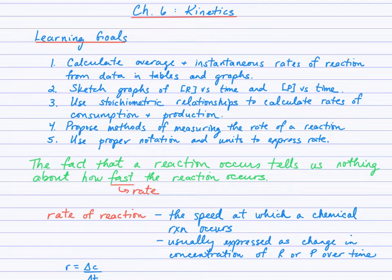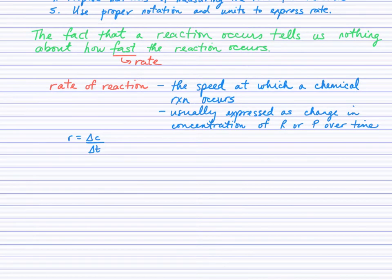Rust doesn't form overnight. If we have an object that becomes rusty over time, it takes possibly months for that reaction to occur. So just writing a balanced equation showing us that a reaction does occur doesn't actually tell us anything about how fast or slow that reaction occurs. Rate studies are done and we'll explore those as we move through the unit.